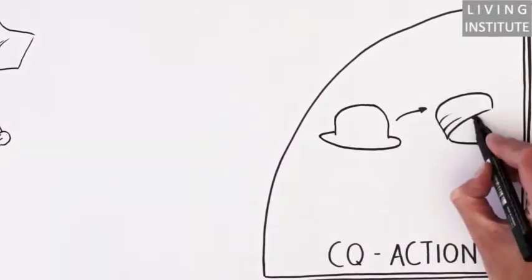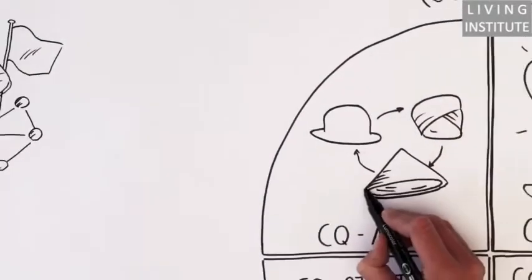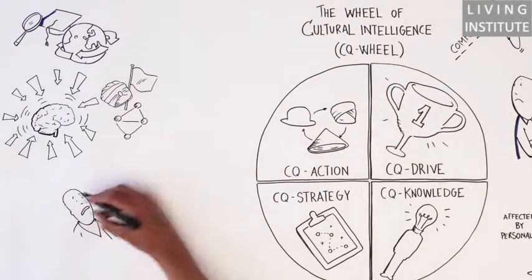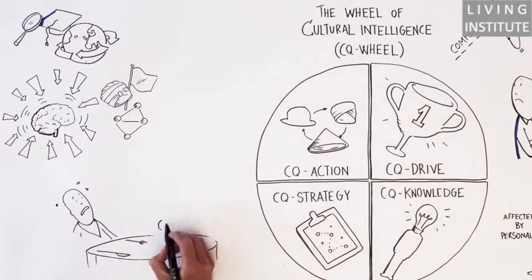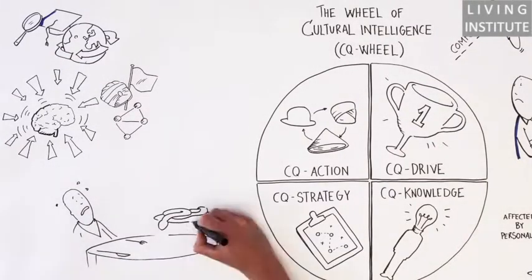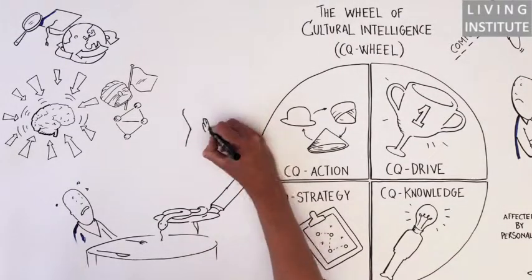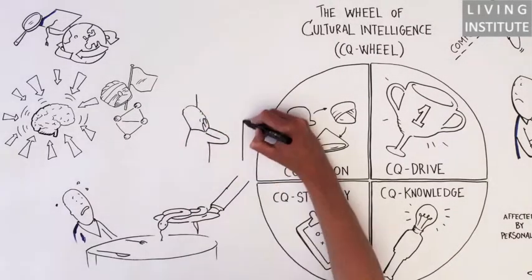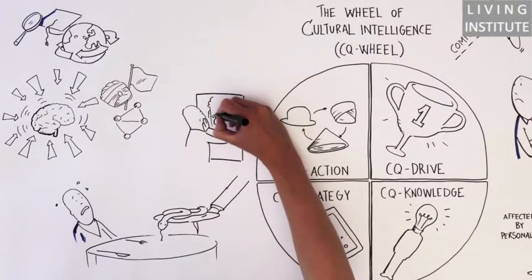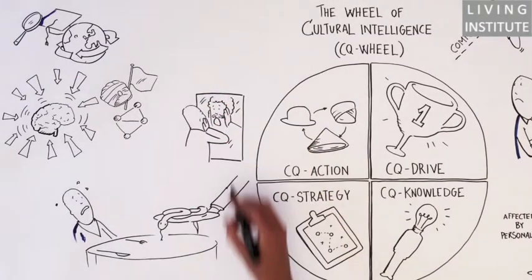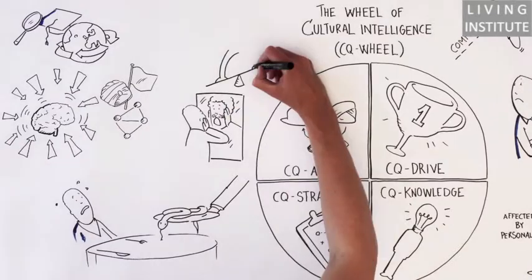The last bit is CQ action. This is very important because it doesn't matter if you feel, know, and plan culturally intelligent, if you don't feel comfortable doing something that might be new to you. So you have to be able to act in a way that doesn't come natural to you, without of course challenging your inner core so much that you can't recognize yourself. Striking this balance is CQ action.